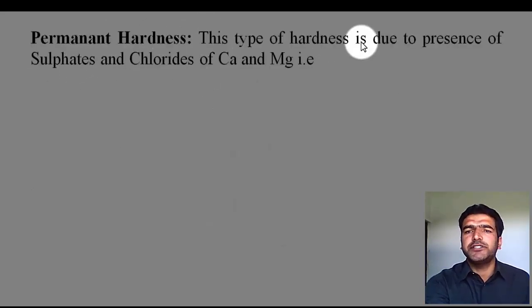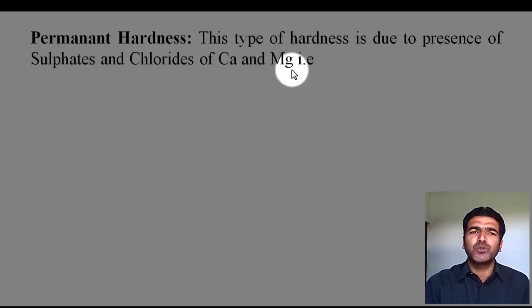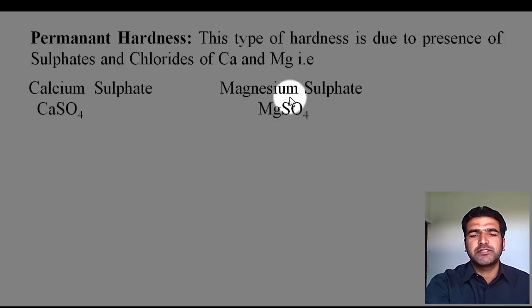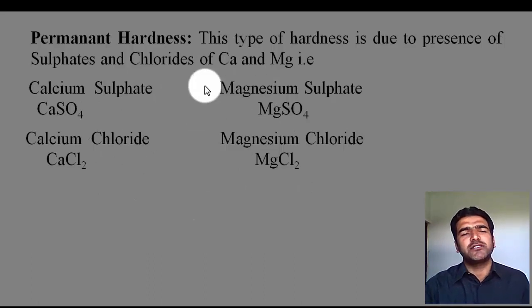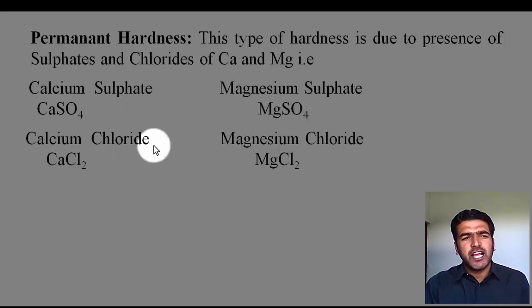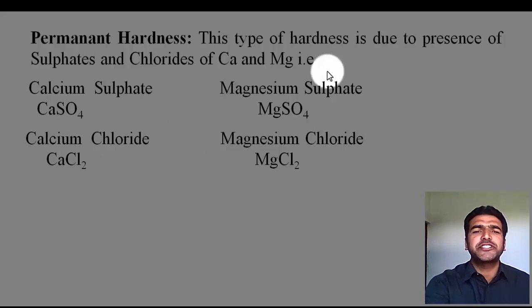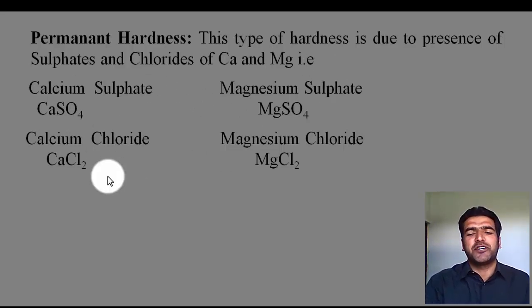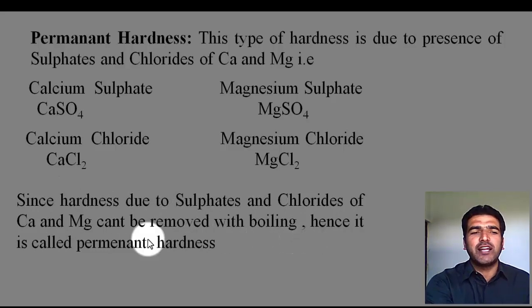Permanent hardness is due to the presence of sulfates and chlorides of calcium and magnesium — that is, calcium sulfate, magnesium sulfate, calcium chloride, and magnesium chloride. The hardness due to these four salts is called permanent hardness. Why is it permanent? Because if you boil the water, it cannot become soft — the hardness due to these salts cannot be removed by boiling. Hence it is called permanent hardness. Thanks for watching this video.